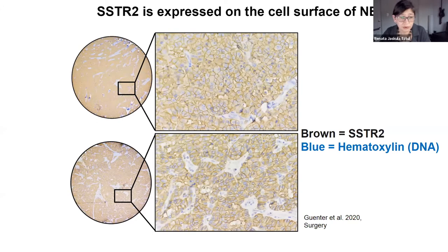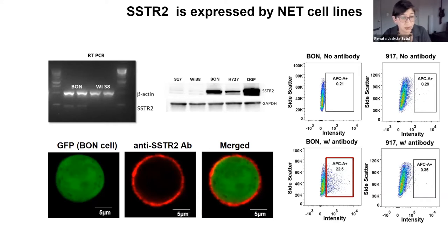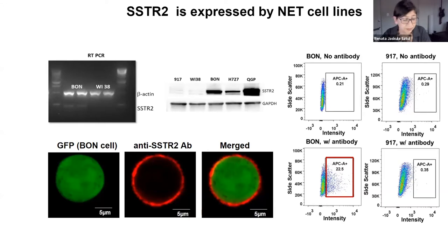We confirmed that SSTR2 is specifically expressed on the cell surface, which is very important for targeted therapy. We also validated available pancreatic neuroendocrine cell lines for SSTR2 positivity. To do this, we checked SSTR2 level on message and on protein, then we looked at cell membrane positivity, and we quantified SSTR2 comparing to normal healthy cell lines.